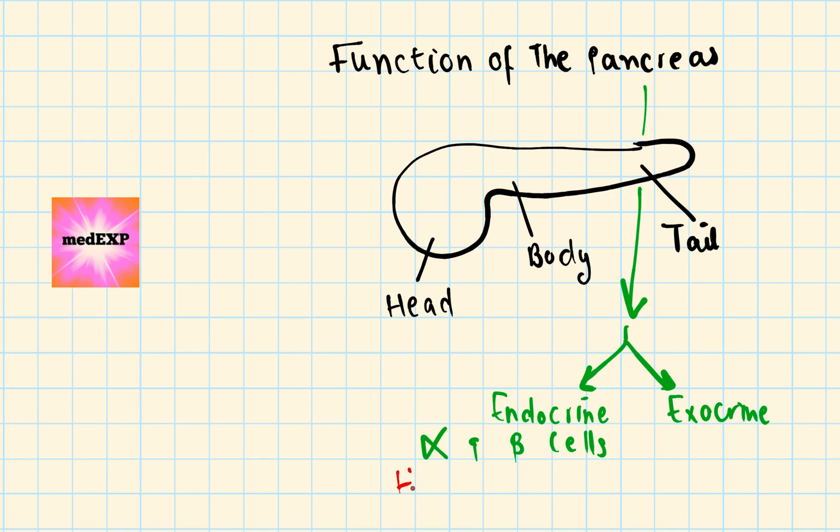The endocrine function includes the alpha and beta cells of the pancreas producing these hormones that are then released into the bloodstream. Now do you remember what kind of hormones, what the job of hormones is in the bloodstream? Yes, to deliver a message to a distant area, distant organ through the bloodstream. So it's kind of like sending snail mail.